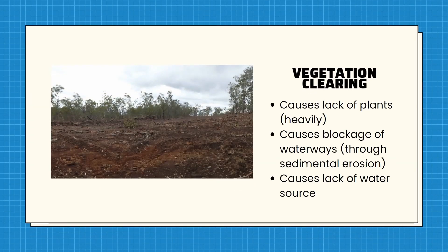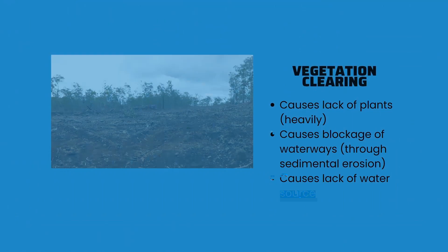Vegetation clearing affects the ecosystem by causing a lack of plants as a food source and a lack of water source for organisms, through increased soil erosion that can lead to the blockage of waterways through sediments.